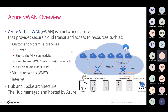What is Azure Virtual WAN? Azure Virtual WAN is a networking service that provides secure cloud transit and access to resources. For customers already familiar with things like the Azure VPN Gateway, Point-to-Site VPN Gateway, ExpressRoute, and VNet Peering — what Microsoft has done is put all these services together into a centralized location to manage all the connectivity.